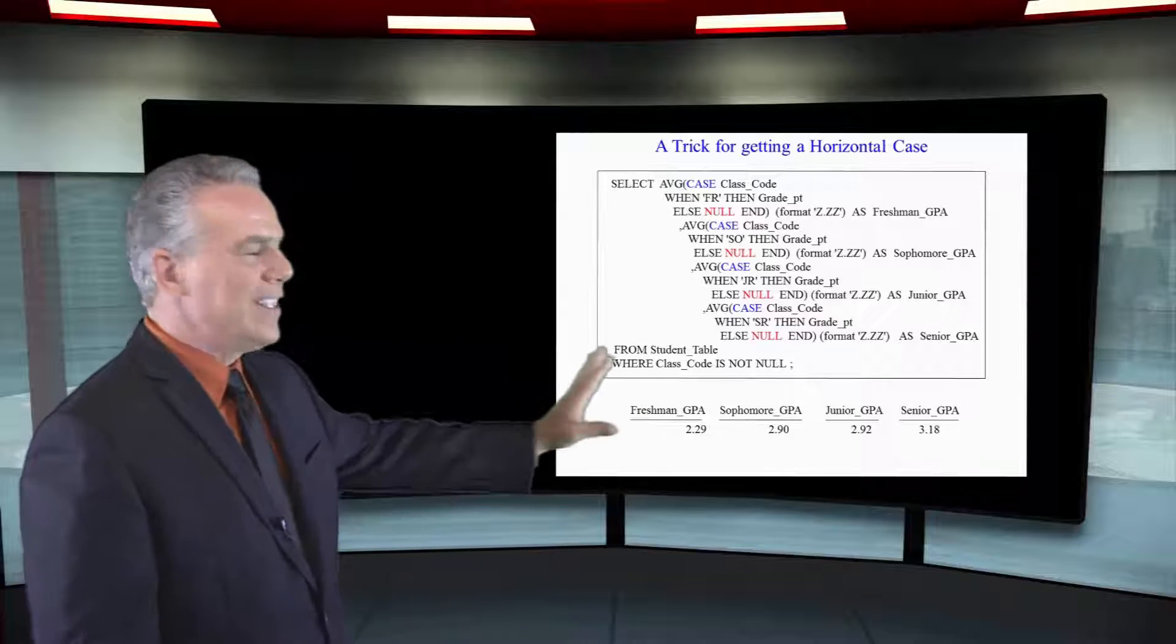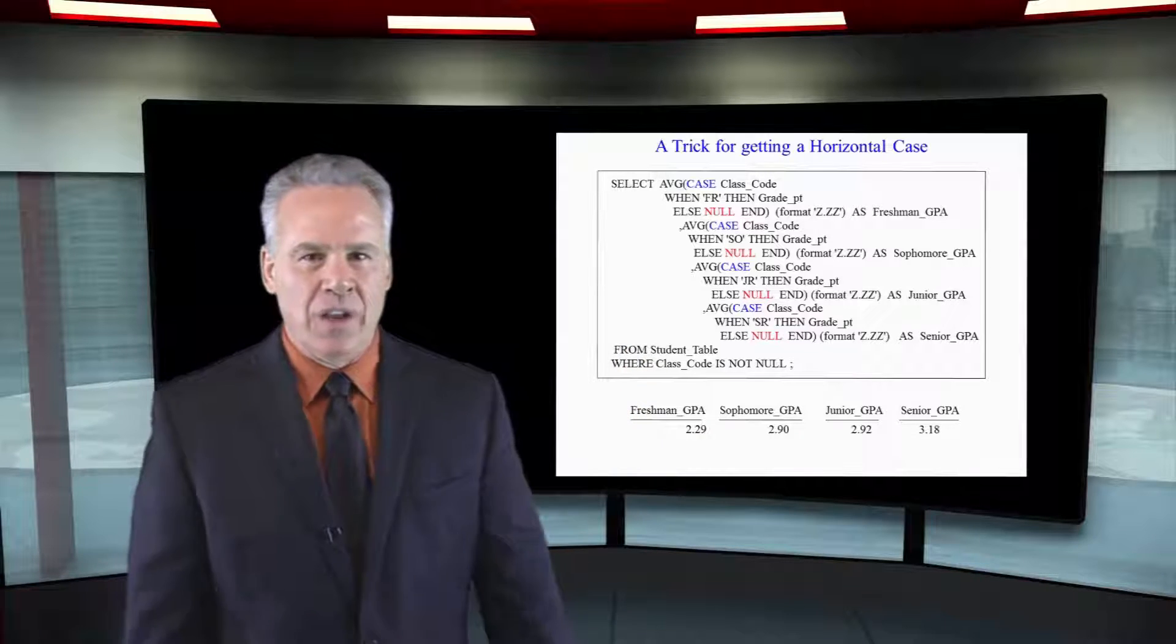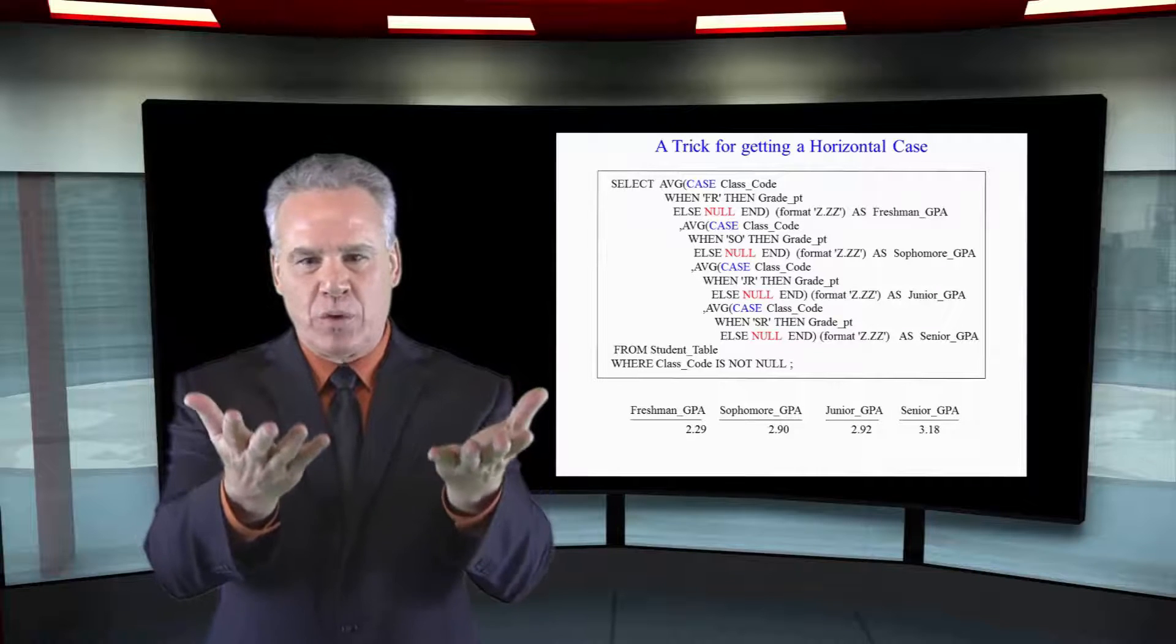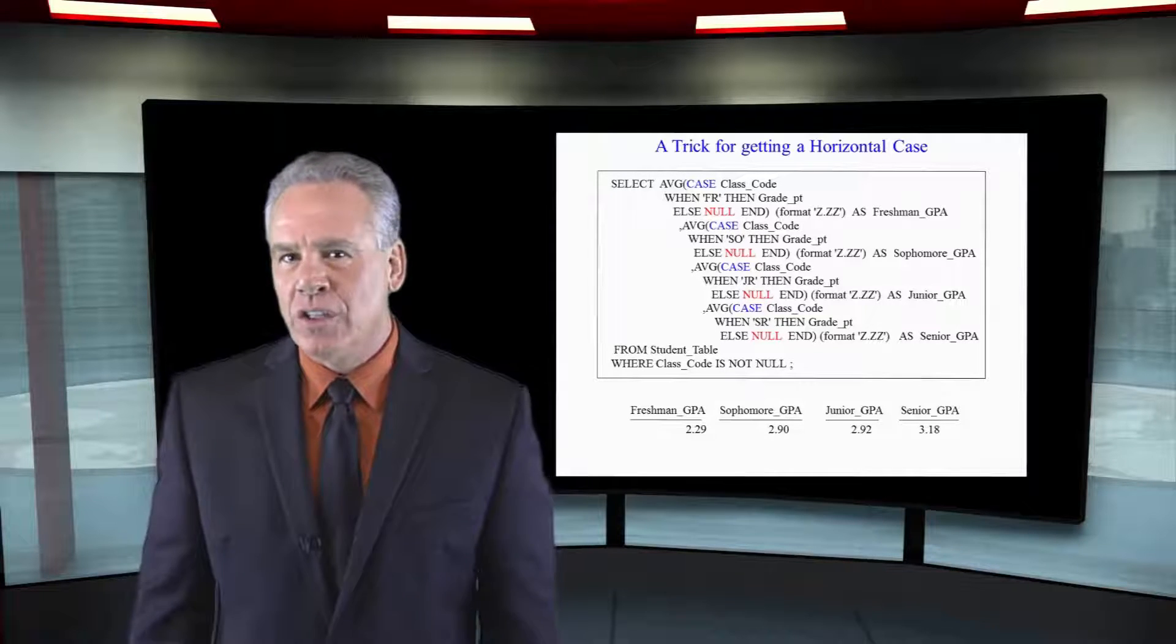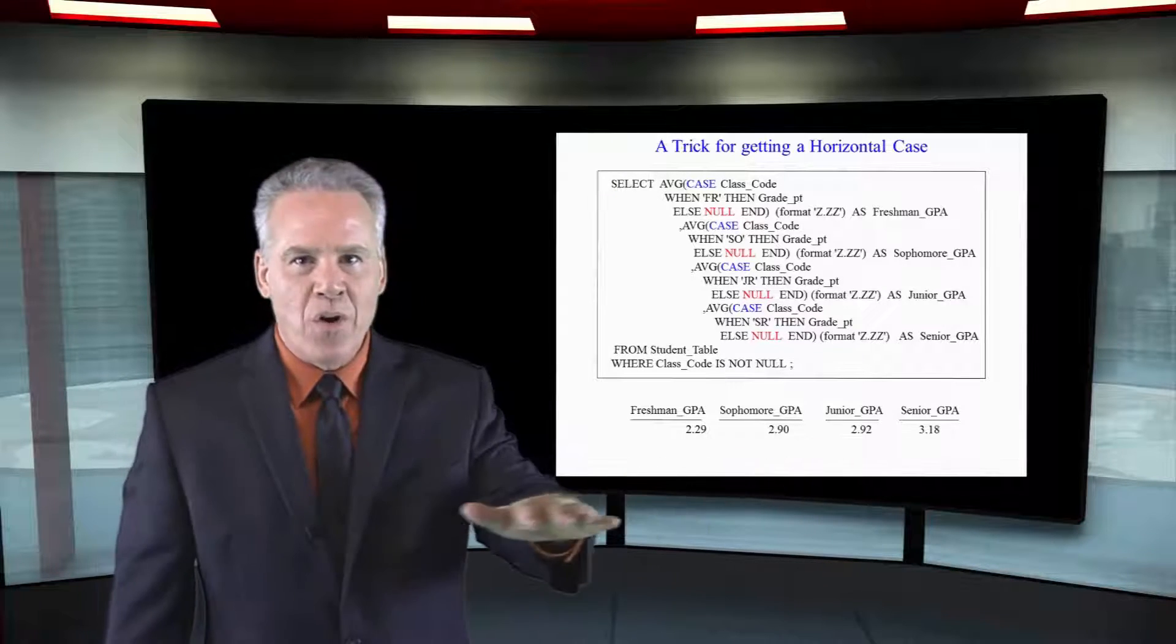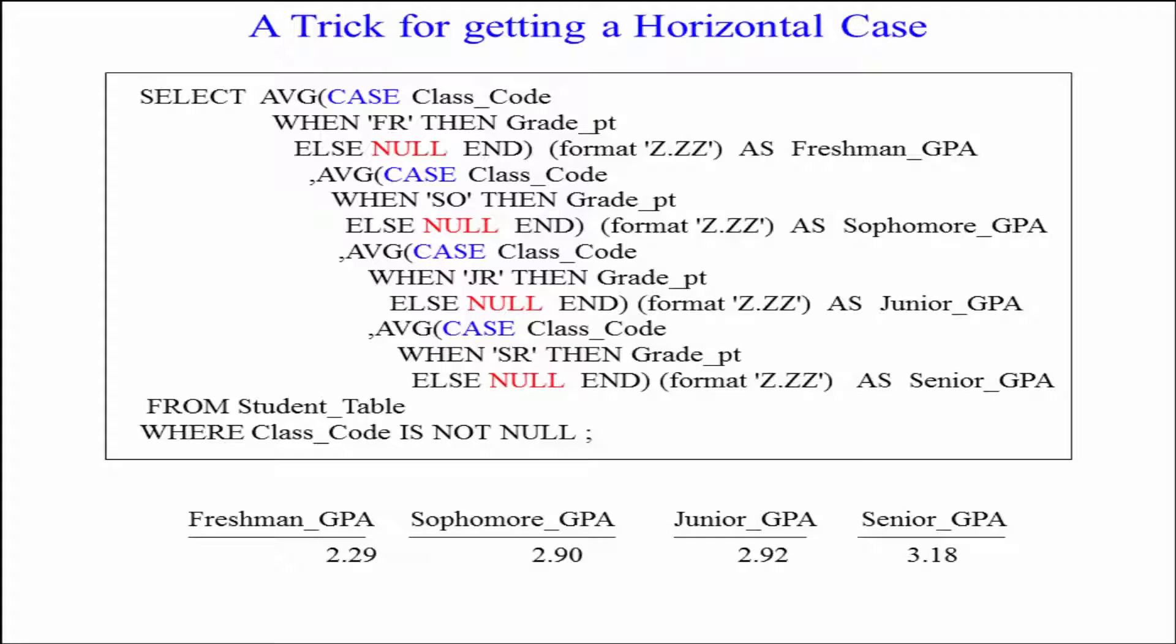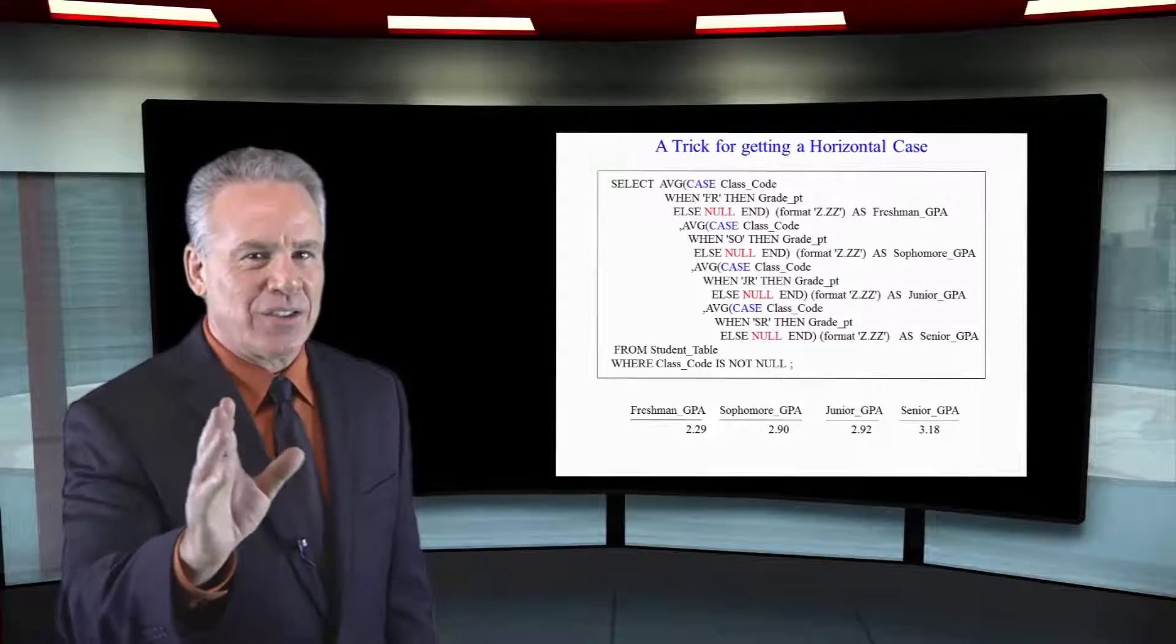This is called the horizontal case. Most of the time we see our reports with many rows. This is going to deliver one row of data, so it's horizontal. And what we're going to do is get the average grade point for the freshmen, the sophomores, the juniors, and the seniors. And here's how we do it.